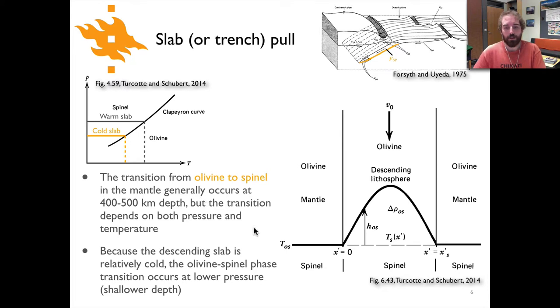You can see that schematically shown here. This would be a cross-section view through a vertically subducting slab, so this would be the mantle or asthenosphere over here and over here, and this is our descending lithosphere here, and these lines are dividing it from the surrounding asthenosphere.